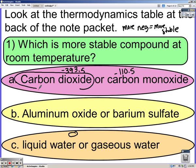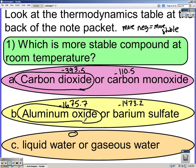Now find the values of the next two on your paper and restart the iPod when you've done so. Aluminum oxide was negative 1675.7 and barium sulfate negative 1473.2, so aluminum oxide is more stable. Be careful when you're looking at compounds that you get the right form. Liquid water was negative 285.8 and gaseous water was negative 241.8, so liquid water is more stable than gaseous water at room temperature.